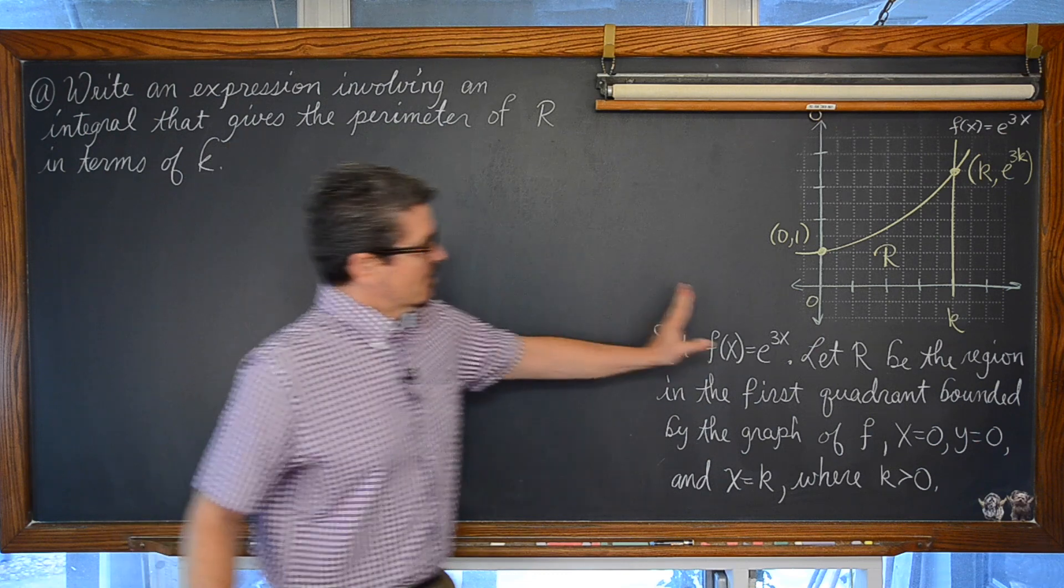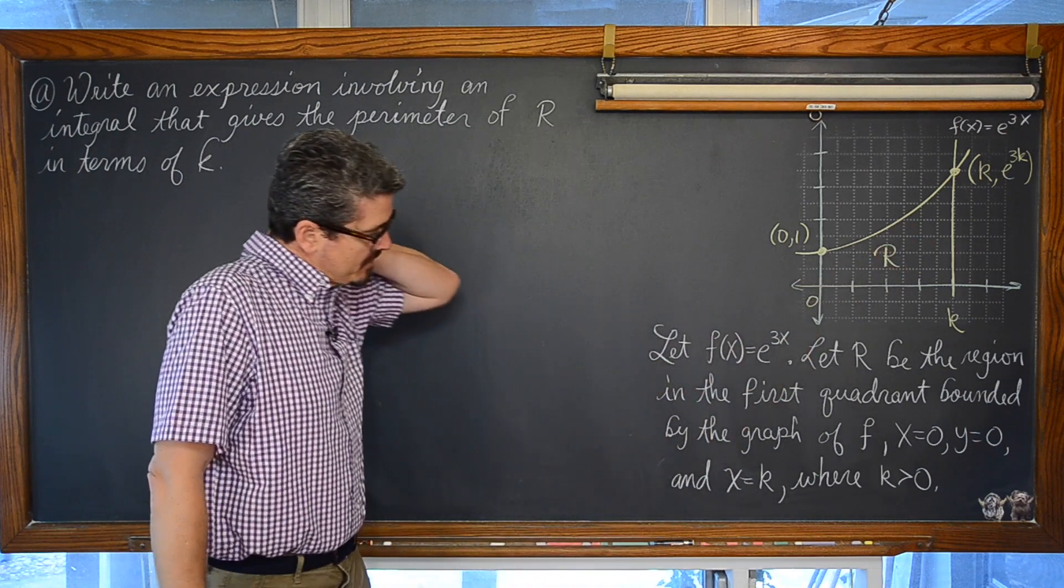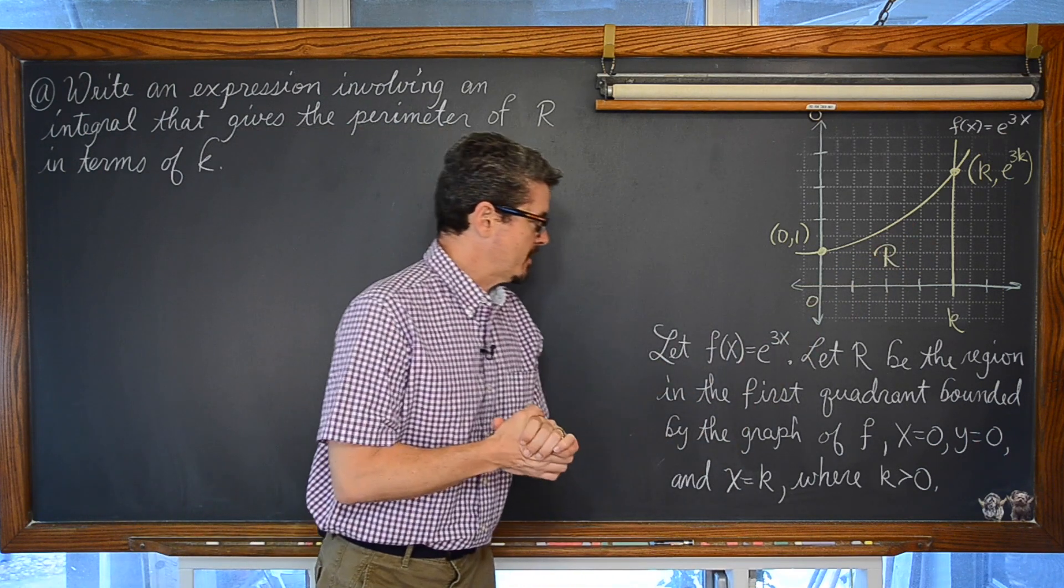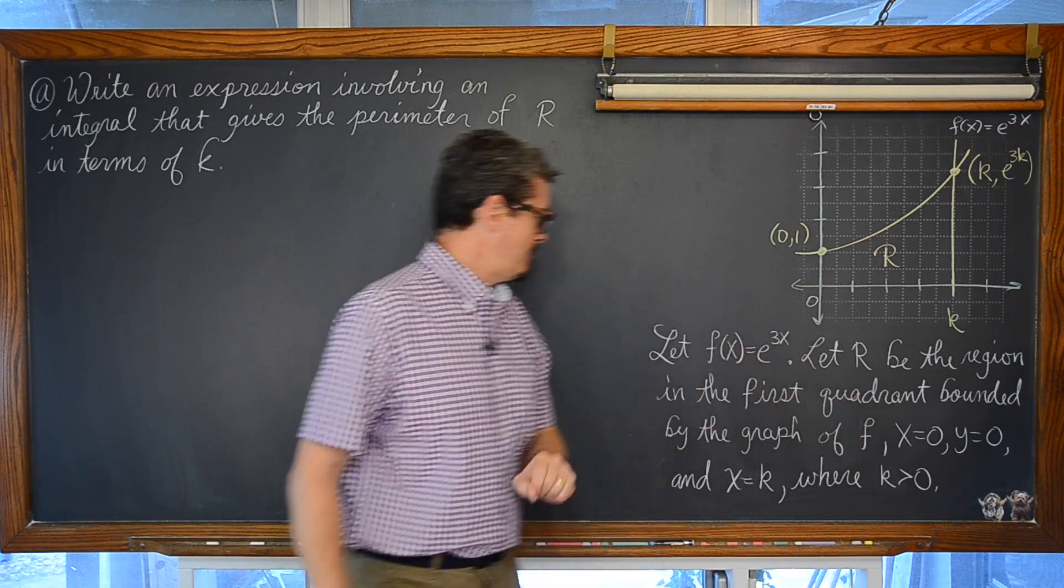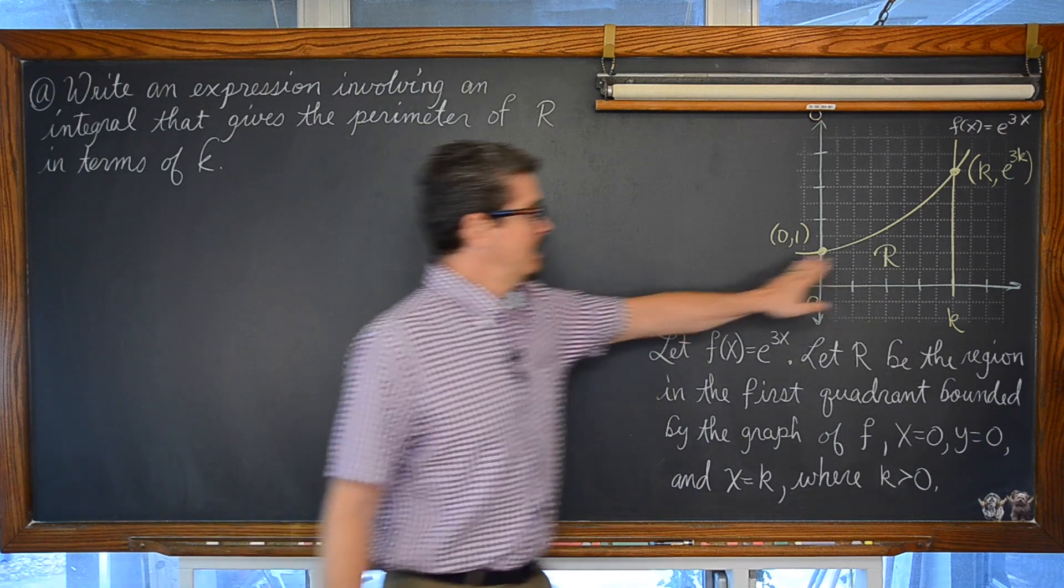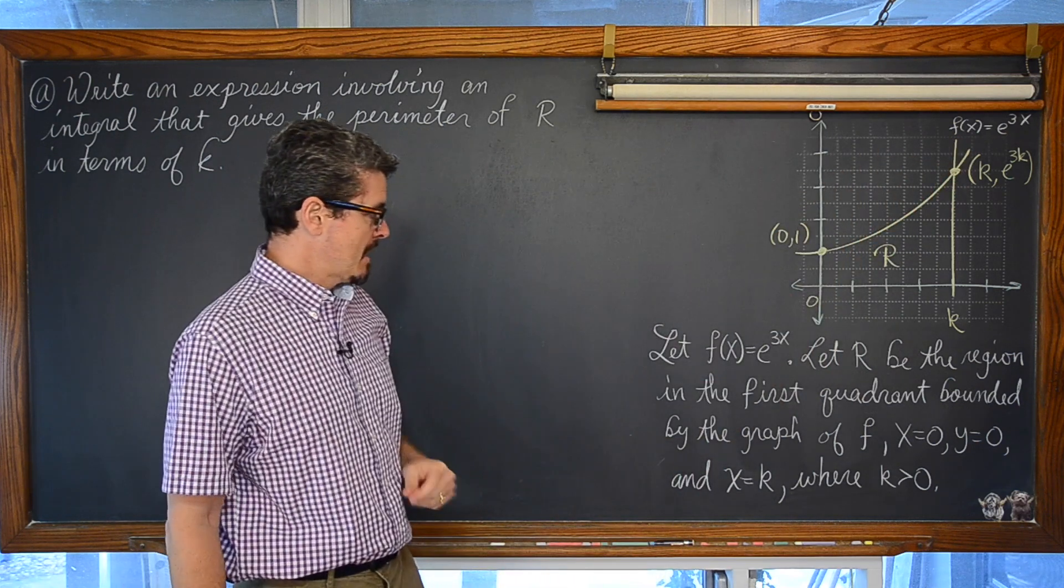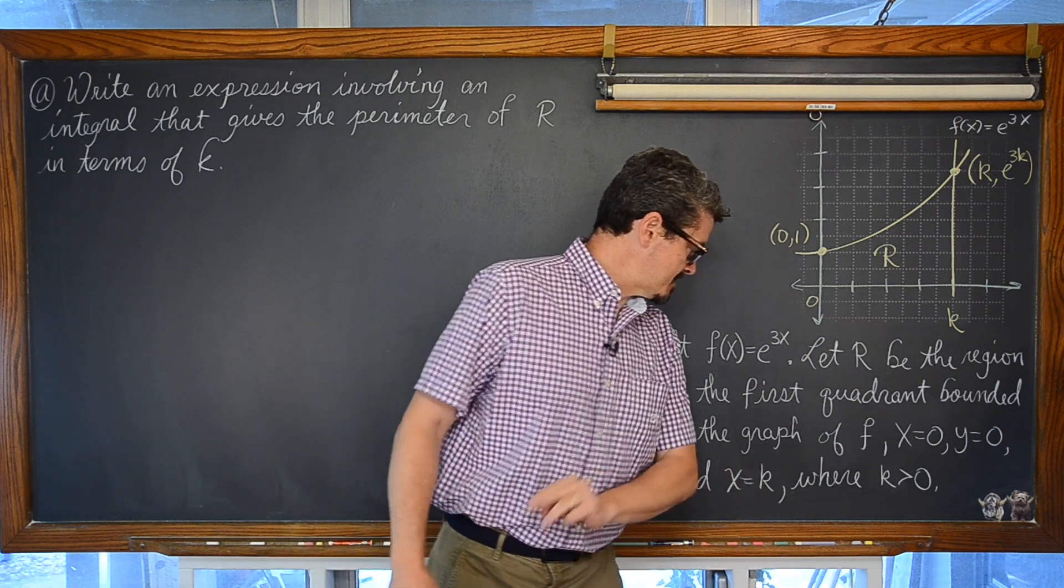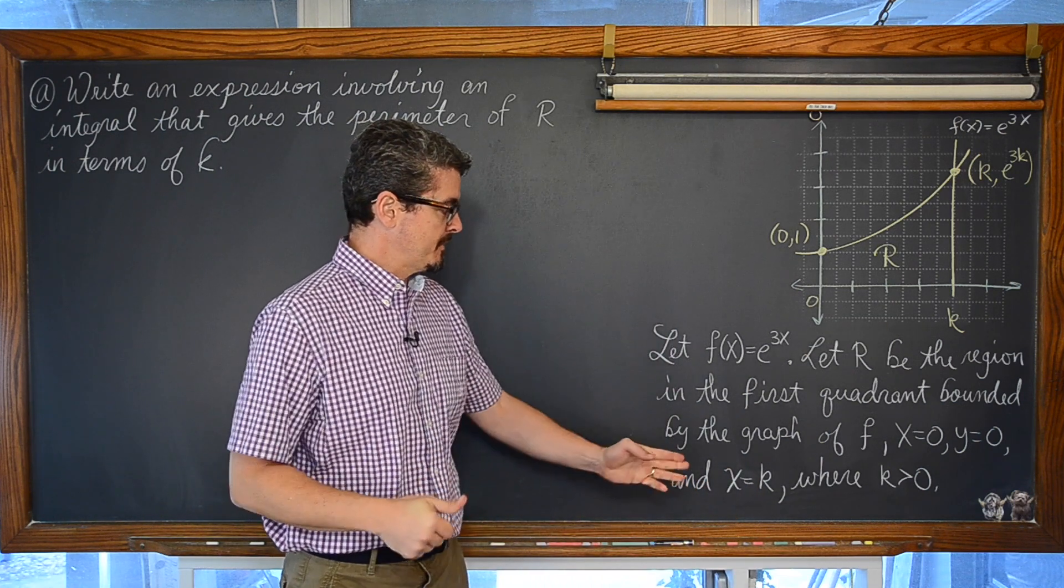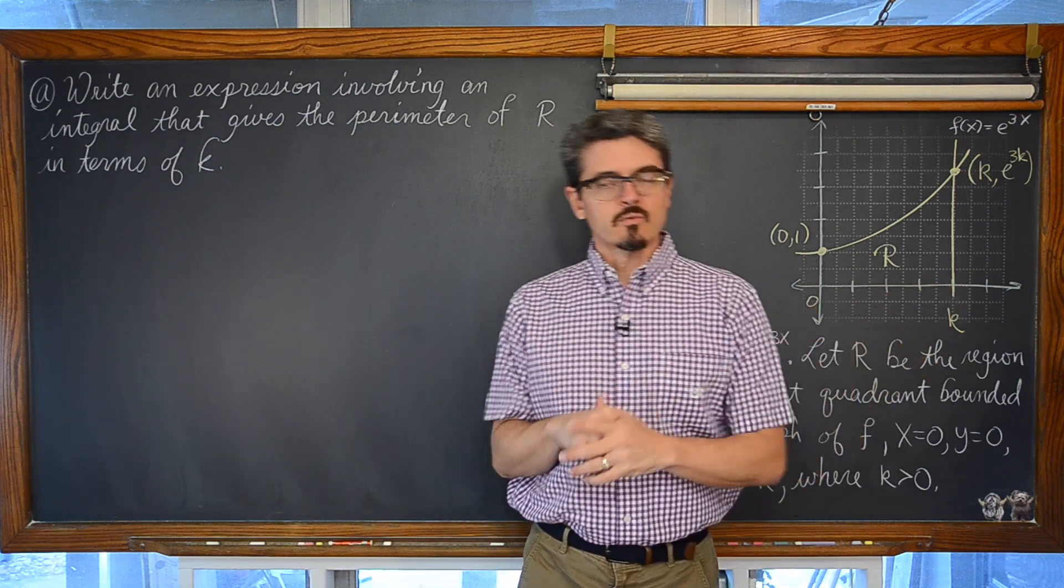We have here a graph and it says let f of x is equal to e to the 3x power. Let R be the region in the first quadrant bounded by the graphs of f, x equals zero, y equals zero, and the vertical line of x is equal to k where k is greater than zero. Otherwise you wouldn't be in quadrant one.